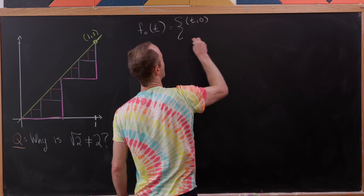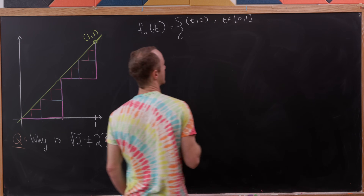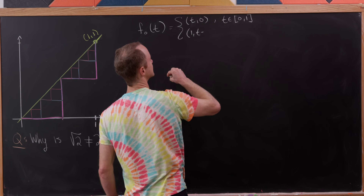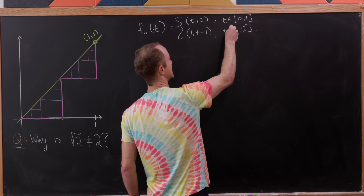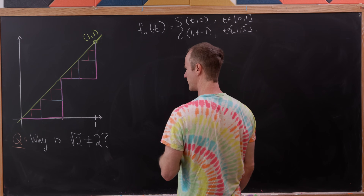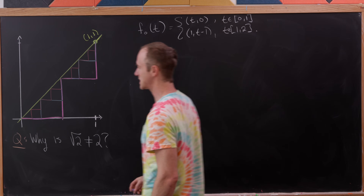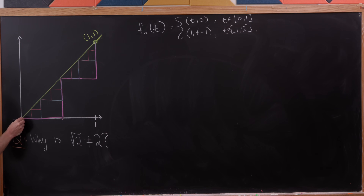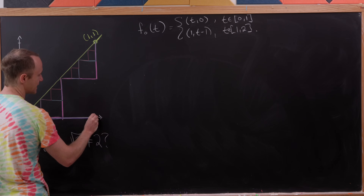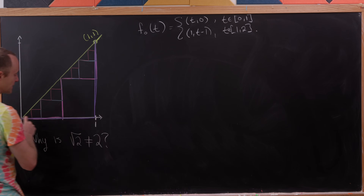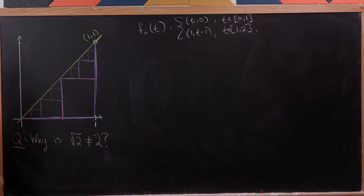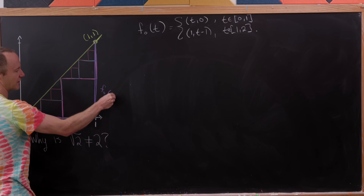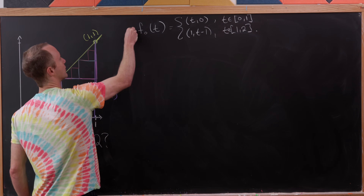I'll define f₀(t) as follows: it has coordinates (t, 0) for t between 0 and 1, and then coordinates (1, t−1) for t between 1 and 2. The first piece gives us a horizontal line segment along the x-axis to the point (1, 0), and the second portion is like an elevator straight up to the point (1, 1). We'll label this f₀(t) in purple.